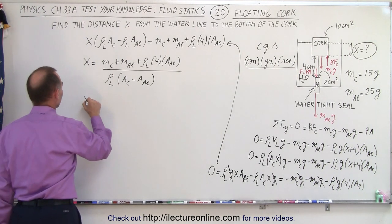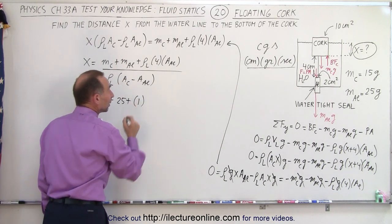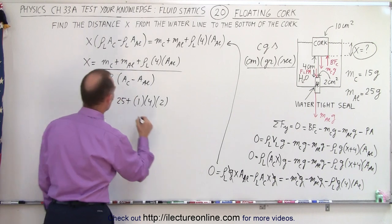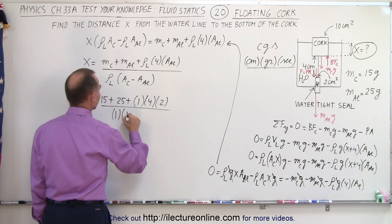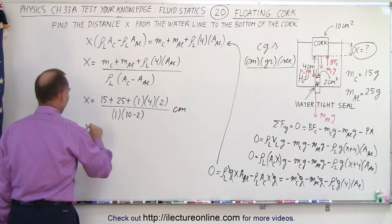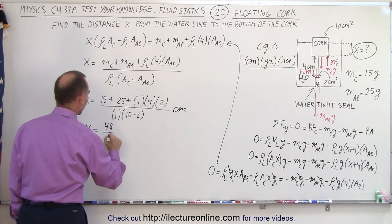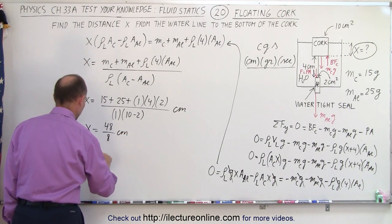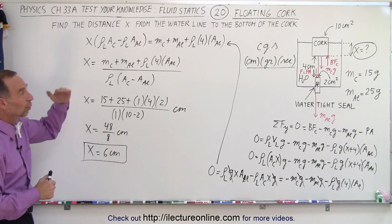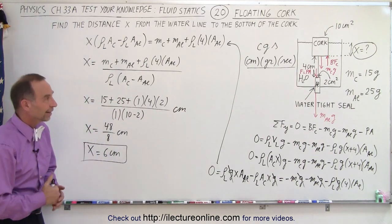Now we plug in all the numbers. x equals: cork mass is 15 grams, aluminum is 25 grams, density of water is 1 gram per cubic centimeter, times 4, times cross-sectional area of aluminum which is 2, all divided by 1 times (10 minus 2). That gives us: 15 plus 25 is 40, plus 8 equals 48 at the top, divided by 8 at the bottom, which equals 6 centimeters. So the answer is the bottom of the cork will be 6 centimeters below the water level. It's all about realizing there's no buoyancy force on the aluminum — just those other four forces — and that is how we do that.